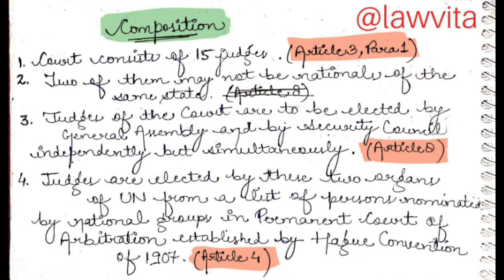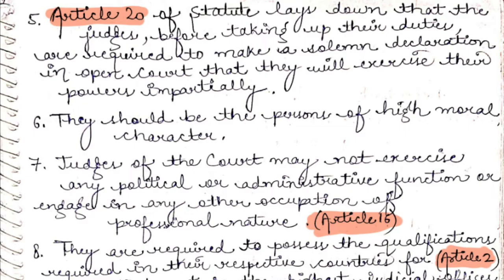There is further election for ICJ judges by the General Assembly and Security Council, as per Article 4. Point 5: Article 20 of the ICJ Statute lays down that judges, before taking up their duties, are required to make a solemn declaration in open court that they will exercise their powers impartially.